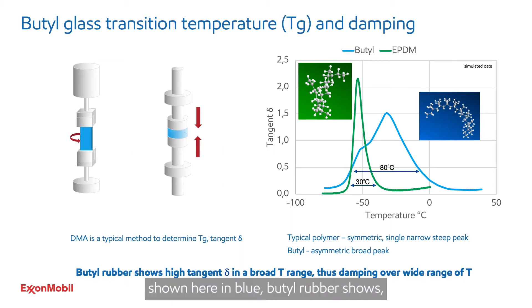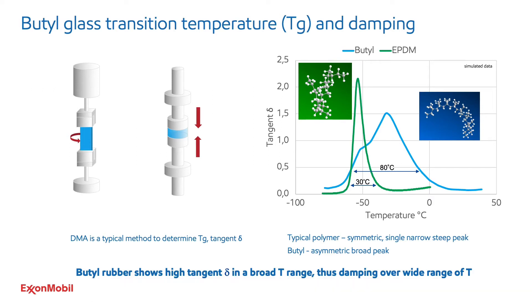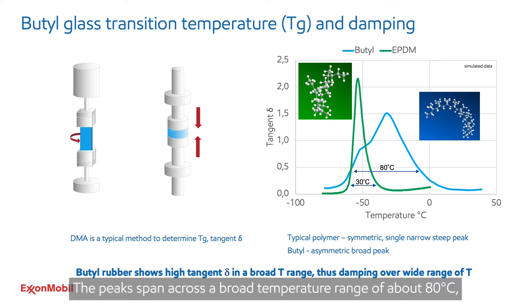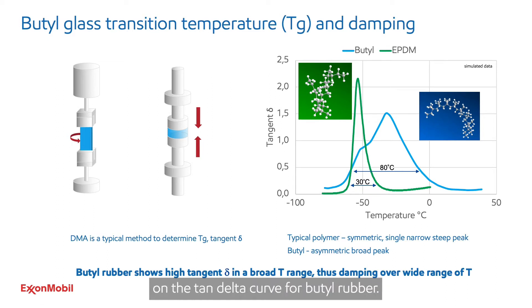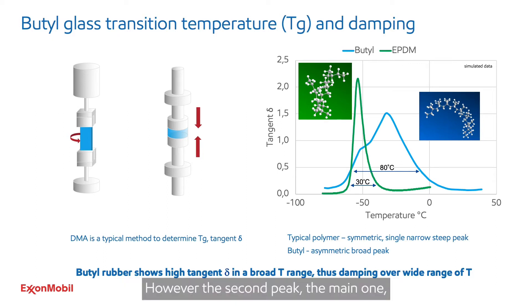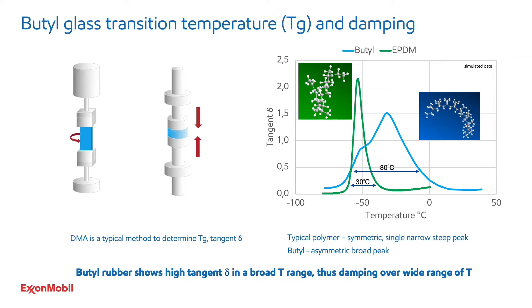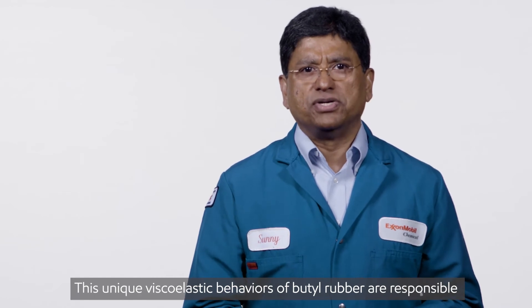Compare this to the butyl curve shown here in blue. Butyl rubber shows an asymmetric, very broad tan delta curve with two peaks — a maximum peak on the high temperature side and an additional shoulder peak on the low temperature side. The peaks span over a broad temperature range of about 80 degrees Celsius, almost three times wider than other elastomers. There are two relaxation mechanisms responsible for the two peaks. The first is due to a weak and fast segmental relaxation, seen in both butyl and EPDM materials. However, the second peak, the main one seen in butyl rubber, is due to a much slower relaxation from the highly packed chain structure. This imparts multiple segmental motions at high temperatures and causes a broadening of the tan delta peak. These unique viscoelastic behaviors of butyl rubbers are responsible for the high damping and shock absorption properties over a broad range of temperatures.